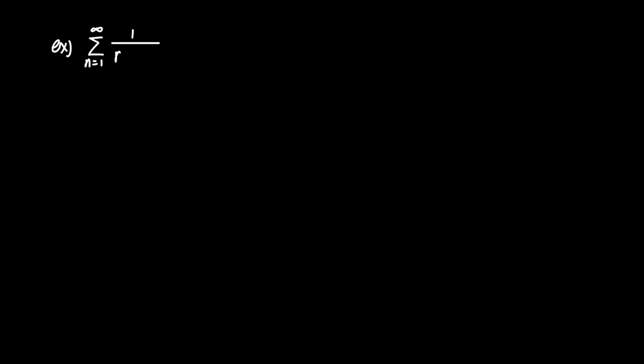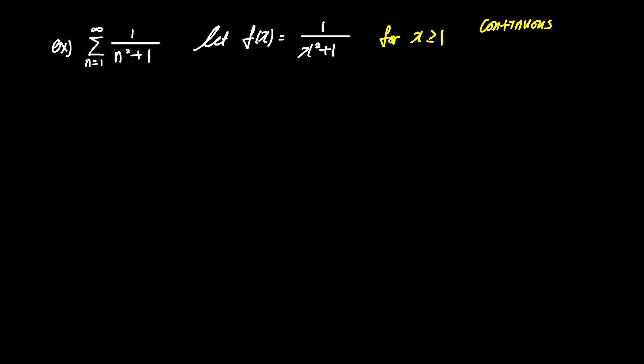This time, let's consider the infinite sum of 1 over n squared plus 1. If we set f of x as 1 over x squared plus 1, it seems like a shape suitable for integration. Before proceeding, let's check if it satisfies the CDP conditions for x greater than or equal to 1. Since the denominator doesn't become 0, it is continuous. Also, as the denominator's degree is greater than the numerator's, it is always decreasing. Finally, all terms are always positive. Hence, it satisfies all the conditions, and we can use the integral test.